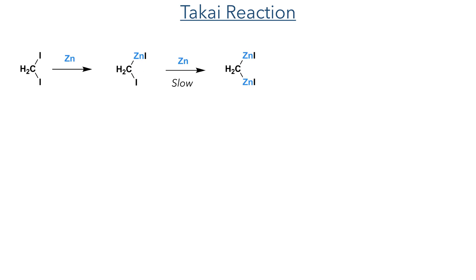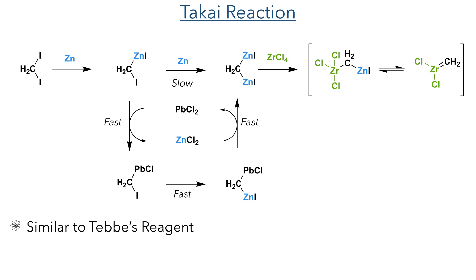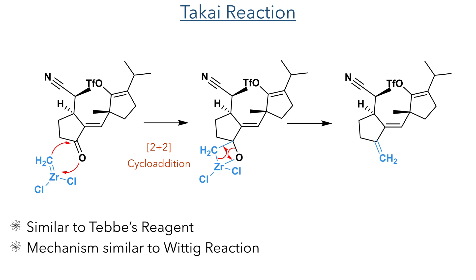Taking this enone forward, they then performed a Takai reaction. Diiodomethane is reacted with zinc dust, which undergoes an oxidative insertion first to produce a mono-zinc product and then a di-zinc product, which is catalysed by lead dichloride. Reaction of this zincylated intermediate with zirconium tetrachloride forms a zirconium carbene, somewhat analogous to Tebbe's reagent. This undergoes a 2+2 cycloaddition with the carbonyl centre to produce a four-membered ring, which then undergoes a cycloreversion to produce the alkene in a process very similar to the Wittig reaction.